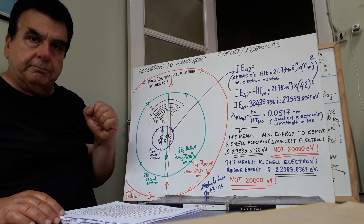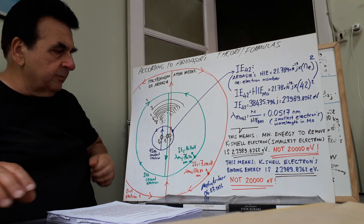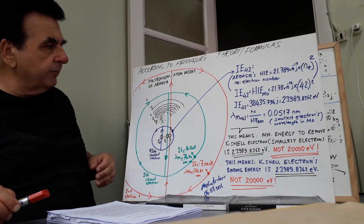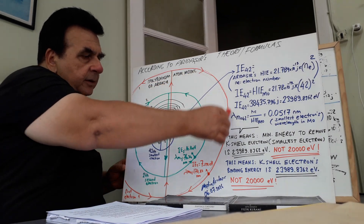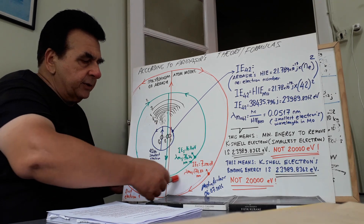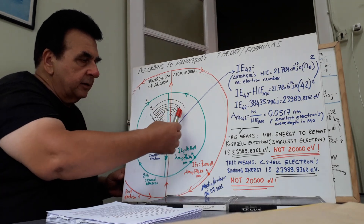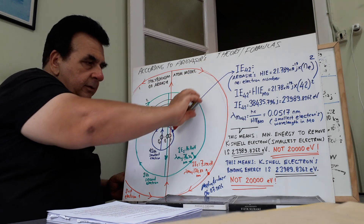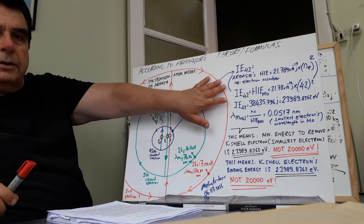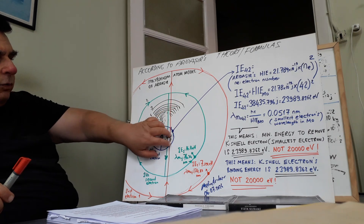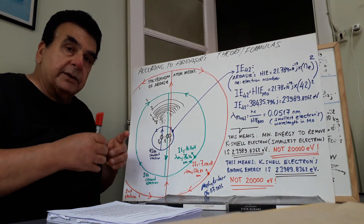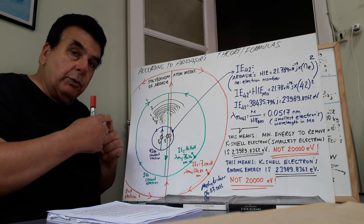This is the molybdenum atom. Here is the smallest electron motion form, and here are the largest and second largest electron motion forms. Through the center, there are totally 45 intertwined electron motion forms, and each one is connected with only one proton.